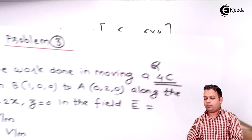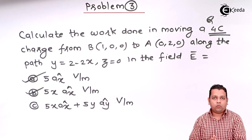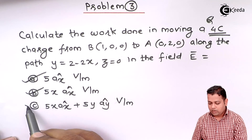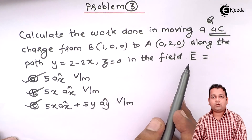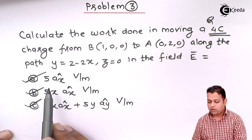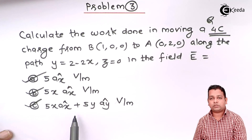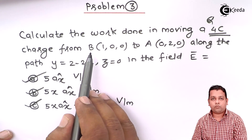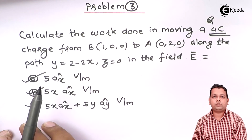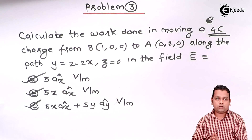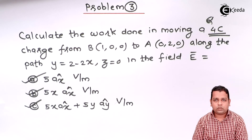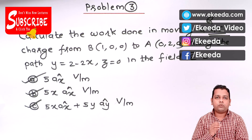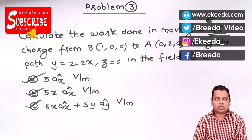This completes problem number three based on the concept of energy expended, also called work done, when a point charge is moved in an electric field produced by another source charge. As the electric field representation changed from 5 ax̂ to 5X ax̂ to 5X ax̂ + 5Y aŷ, the work done for the same point charge over the same displacement from B to A resulted in different values: 20, 10, and −30 Joules. In the next lecture, we will look at what potential means for a charge in the electric field and what the potential difference will be. Thank you.